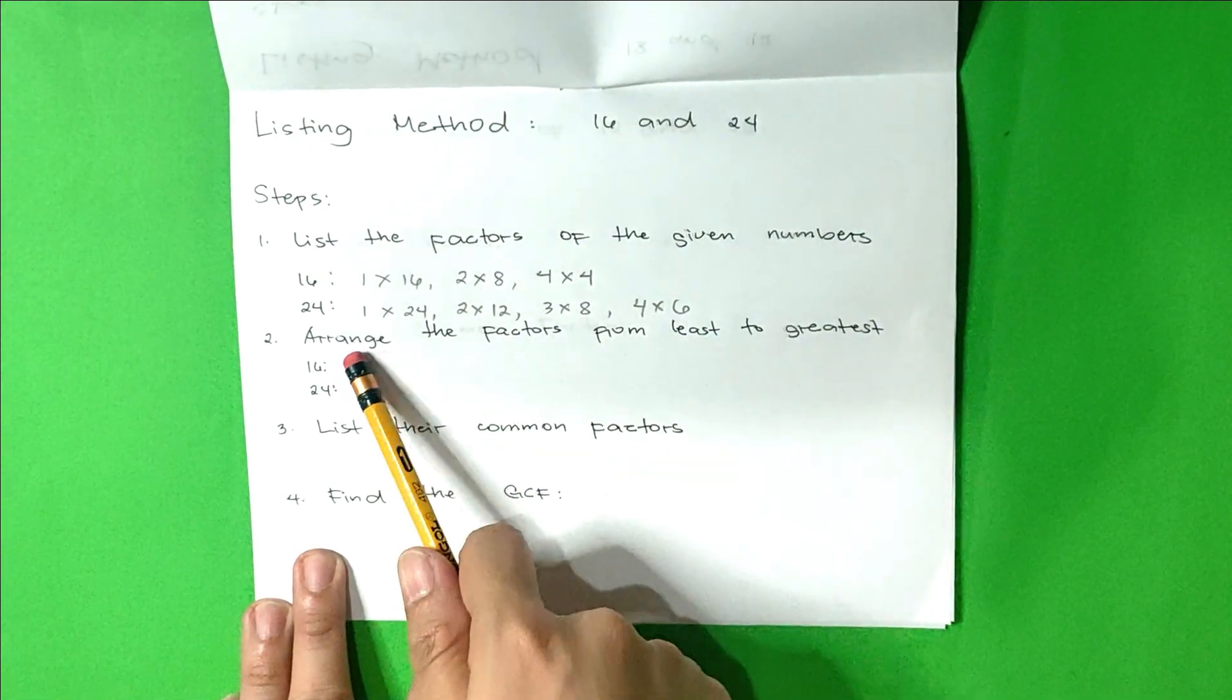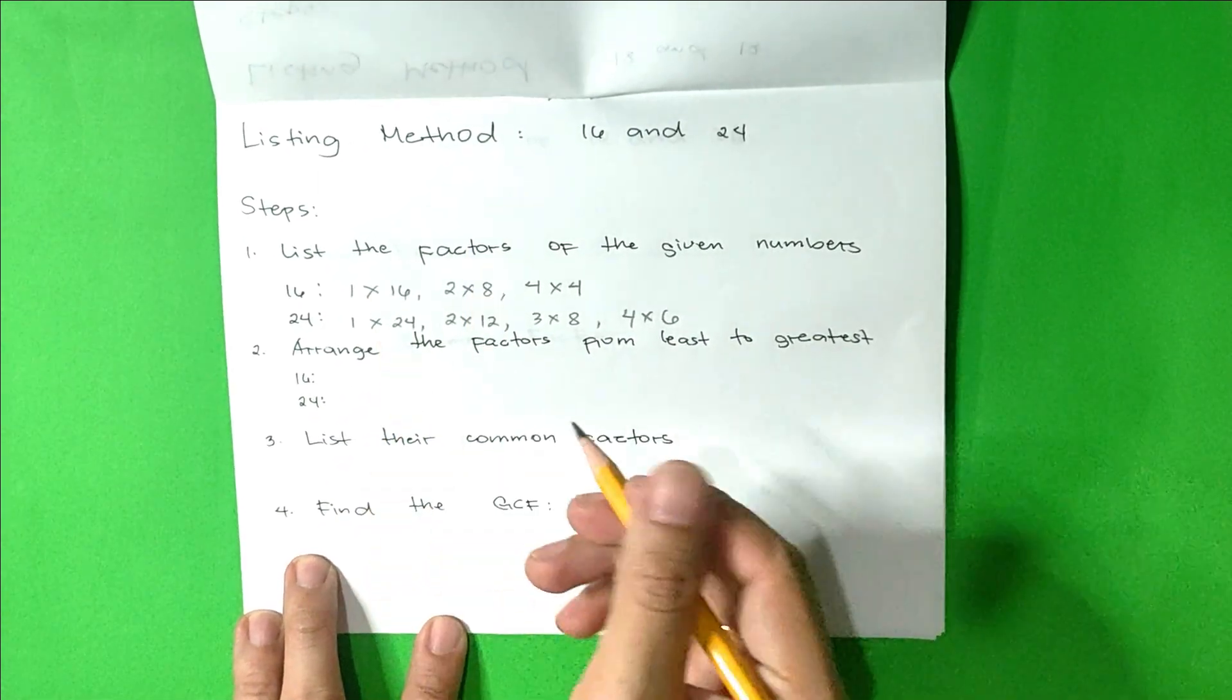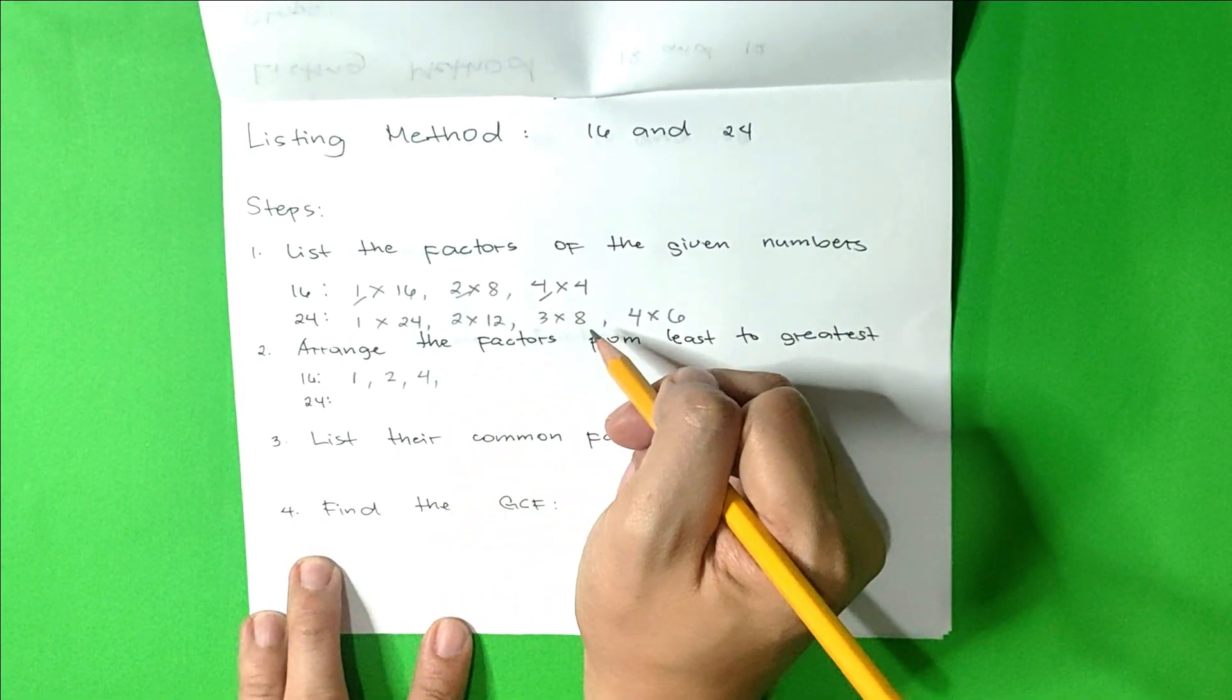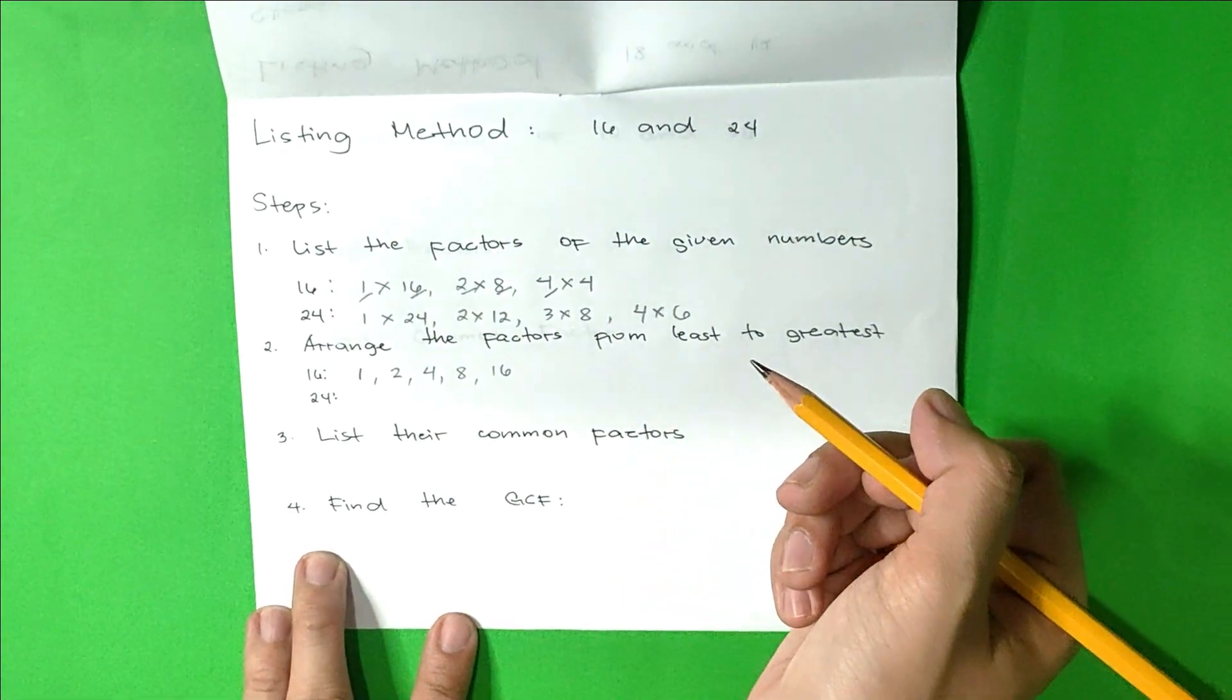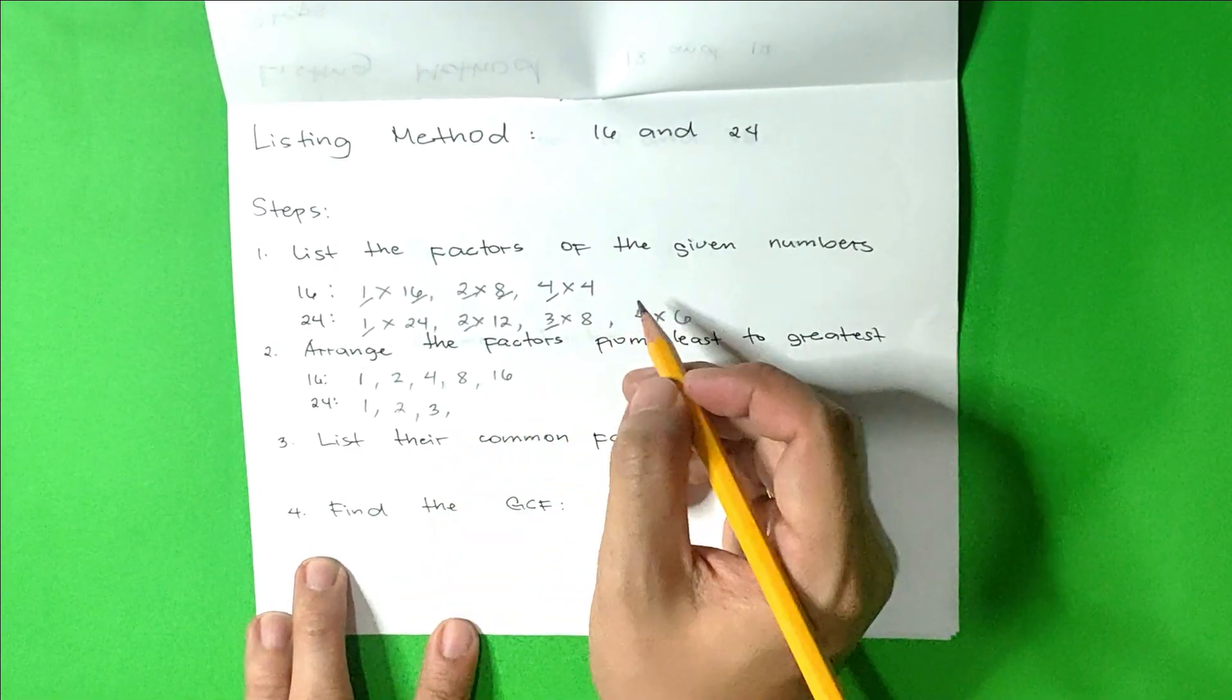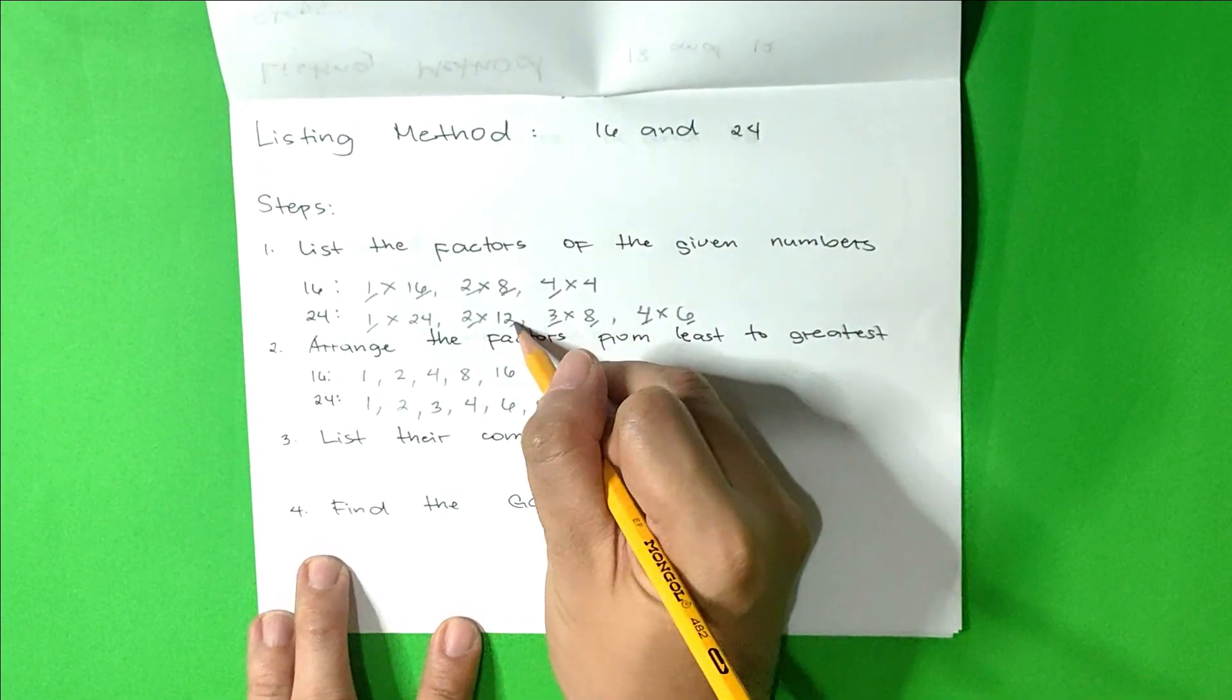The second step is arrange the factors from least to greatest. Let's start with number 16. What's the lowest number? Number 1. Next, 2. Next, 4. Then 8, and 16. For number 24, we have 1, 2, 3, 4, 6, 8, 12, and 24.